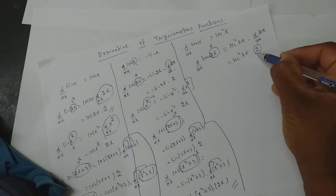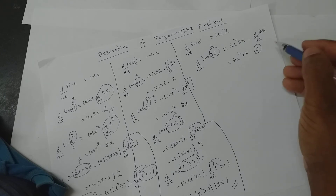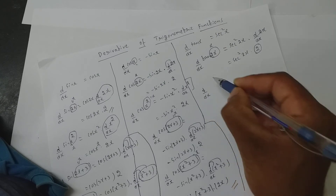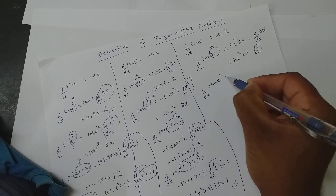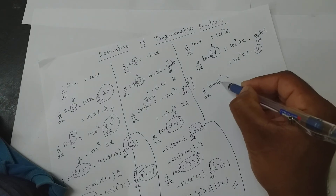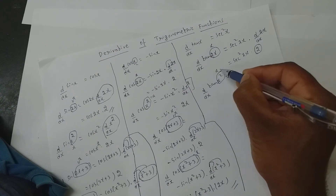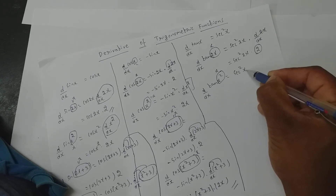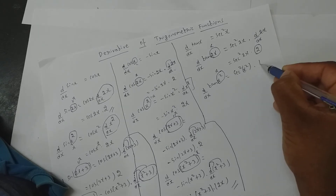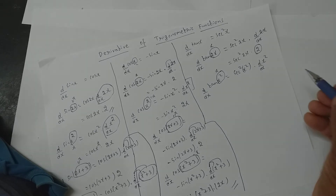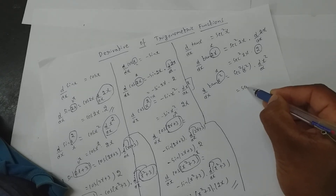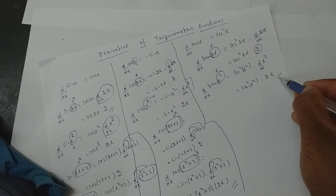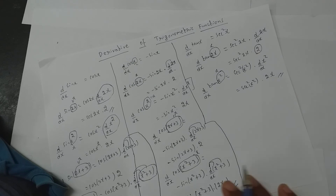Most students forget it, but my students will never forget it. Now if it is d/dx of tan x square, again you take it to be x. The derivative of tan x is secant square, so this time it is secant square of x square into d/dx of x square — so it is secant square x square into 2x. That is the answer.